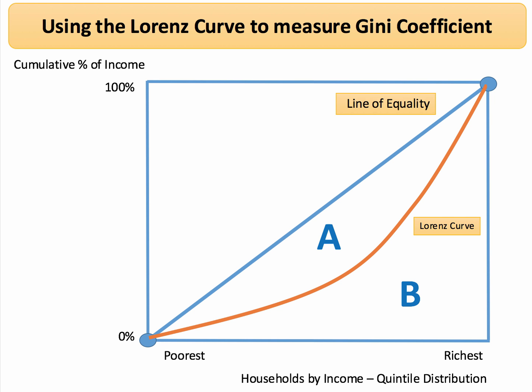Let's go back half a stage. Think back to the Lorenz curve, which is a cumulative income curve shown here. The Lorenz curve is the path of income as we move from the poorest households to the richest households. In theory, if there was no inequality, the Lorenz curve would be a 45-degree line of equality from the origin. The reality is that the Lorenz curve is skewed, bowed away from the line of equality, and the greater the skew — the greater the difference between the curve and the line of equality — the bigger is the degree of income inequality.